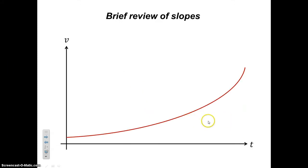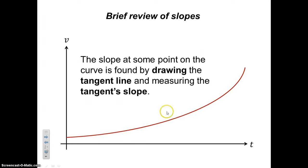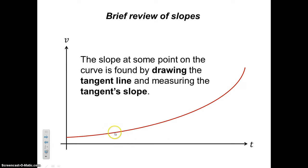What if we have a curved line? There's not a constant slope — its slope is changing because it's curved. The way that you find the slope at some point is by drawing what we call the tangent line at that point and measuring that tangent's slope.